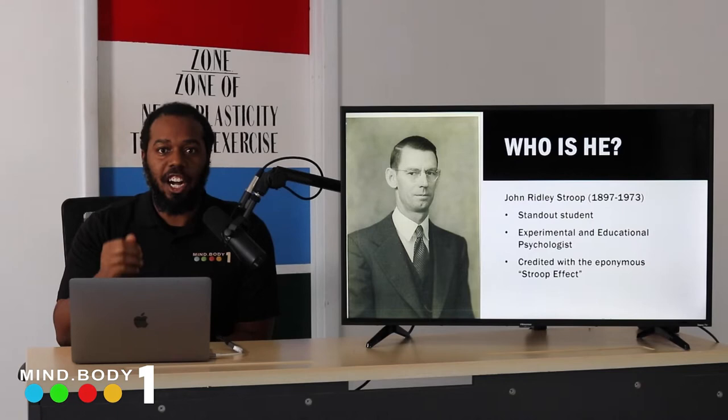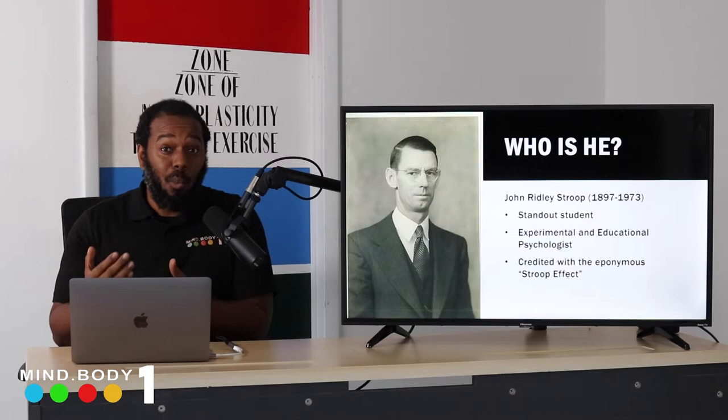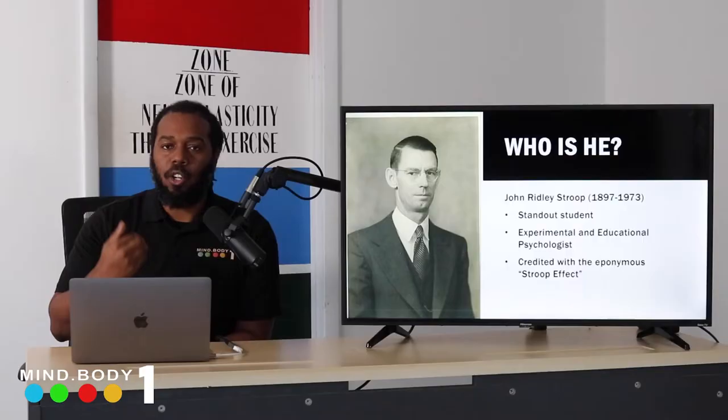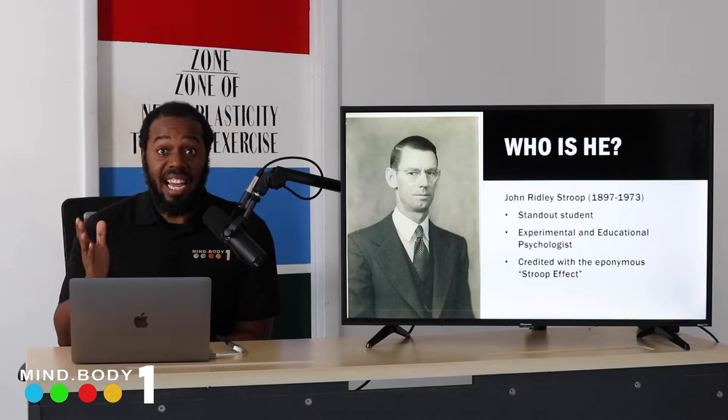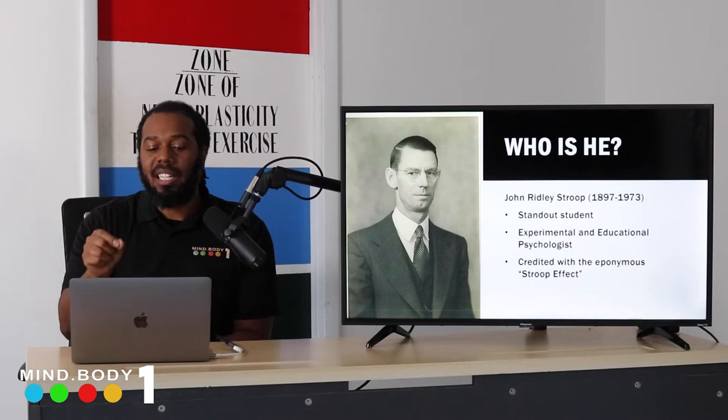Who was John Ridley Stroop? He was born in Murfreesboro, Tennessee in 1897 and lived to 1973, coming up around the turn of the century. This was a prime time for psychology in general — we know about people like Carl Jung and Sigmund Freud, considered among the biggest psychologists. But Stroop was in a different lane; he was more in experimental and educational psychology.